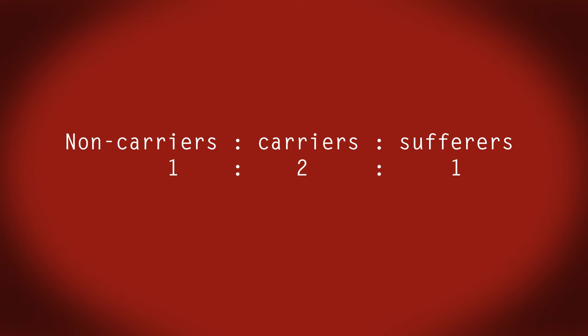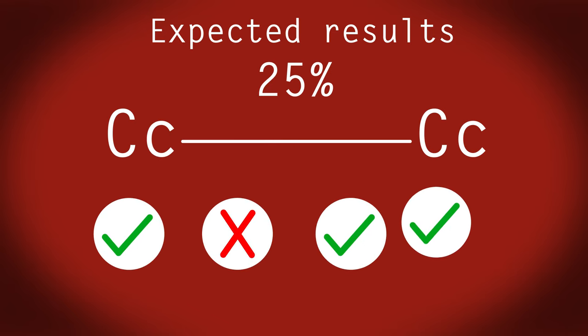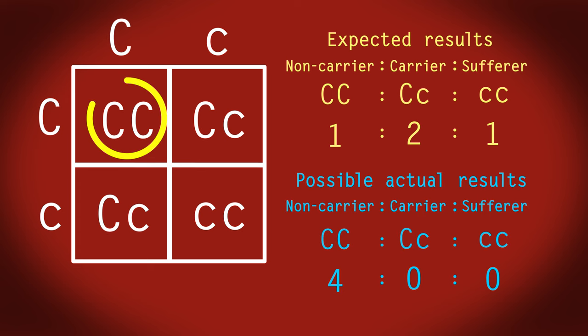But remember, these are just probabilities. We call these the expected results. So whilst we could expect that 25% of offspring of two cystic fibrosis carriers to suffer from the disease, it is a probability. The actual results may be different. Two carrier parents could potentially have four children that are all non-carrier CC genotypes.